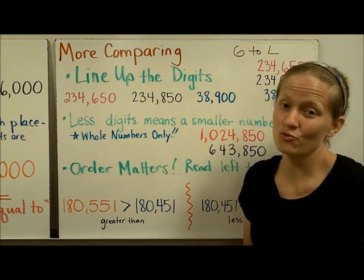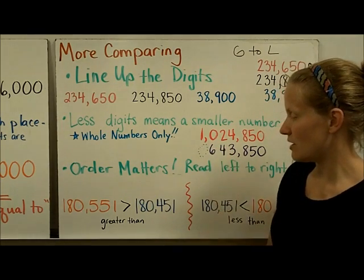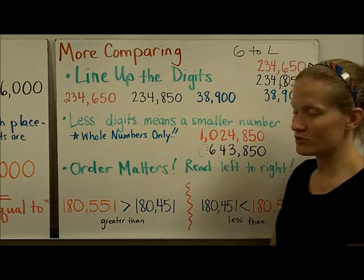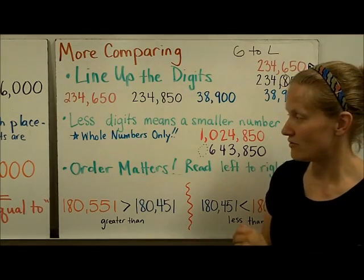The reason that that rule works is because it's like we have an invisible zero right here in the millions place. And because 1 is, of course, bigger than 0, this number is larger, this 1,024,850.